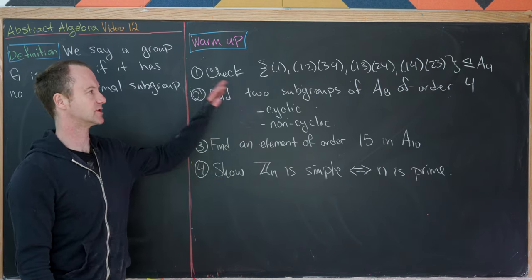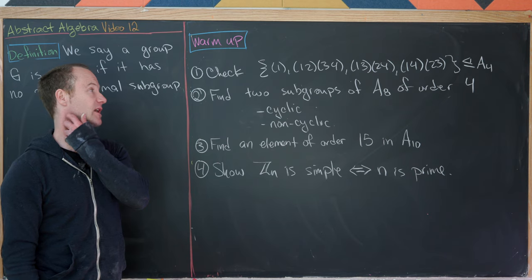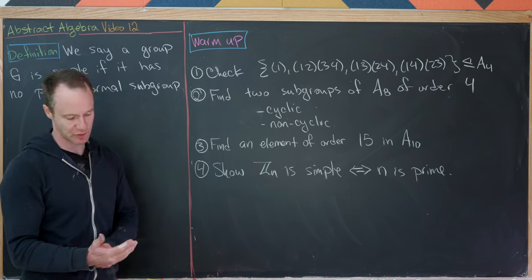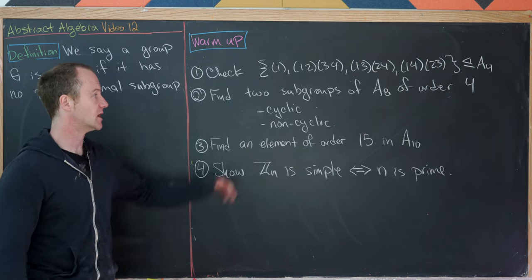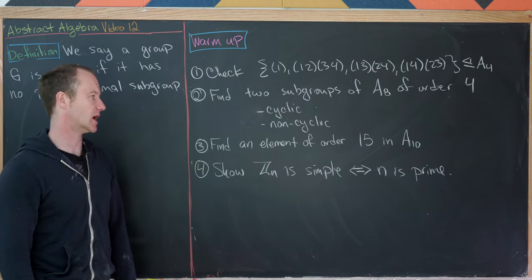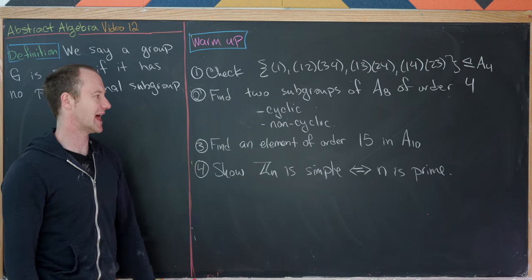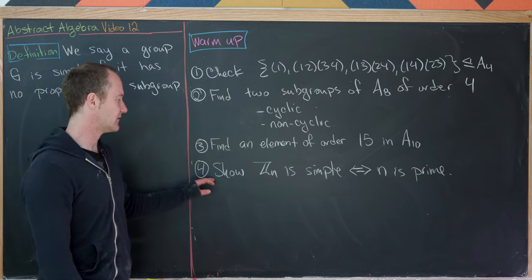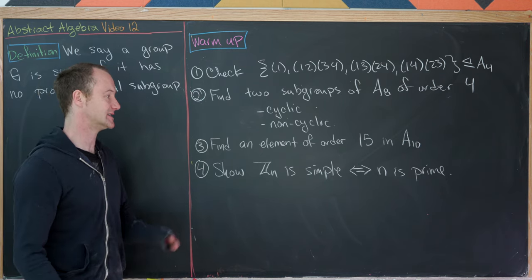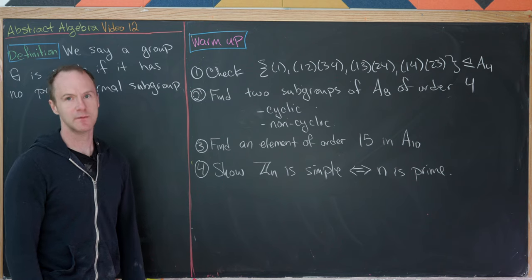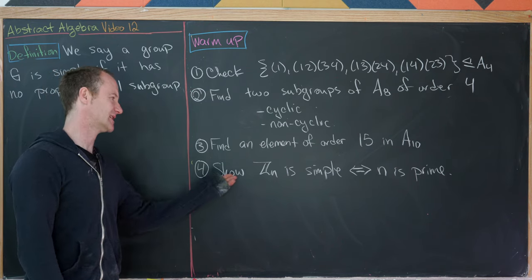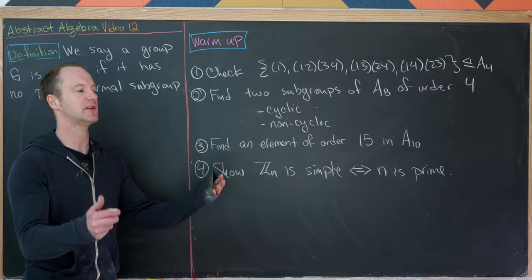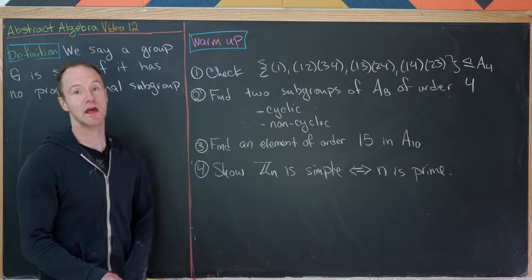For warm-up exercises: verify that 4-element subgroup is normal in A4; find subgroups of A8 of order 4, both cyclic and non-cyclic; find elements of specific orders in A15 and A10; and show that Zn is simple if and only if n is prime. These cyclic groups of prime order and the alternating groups give two infinite families of simple groups.